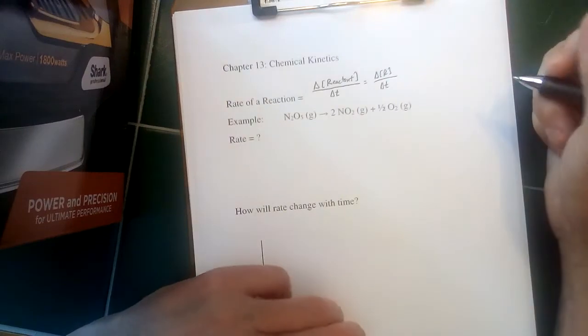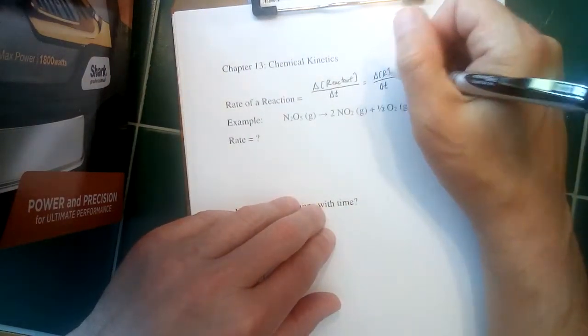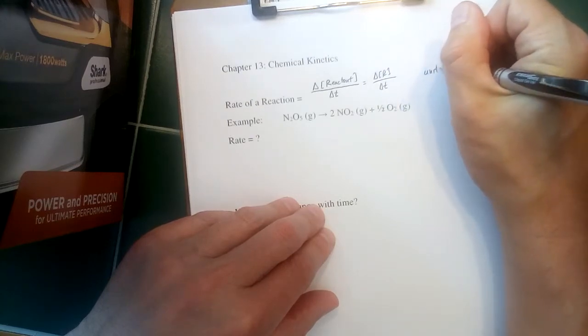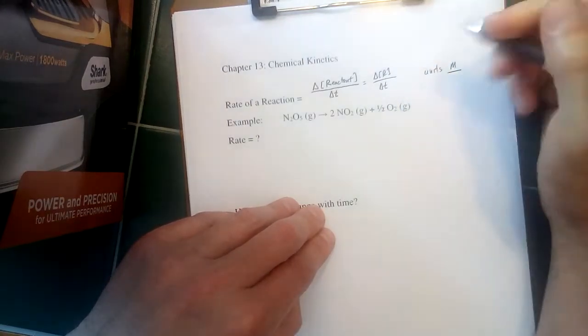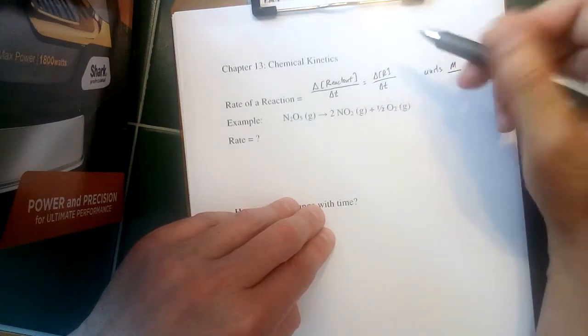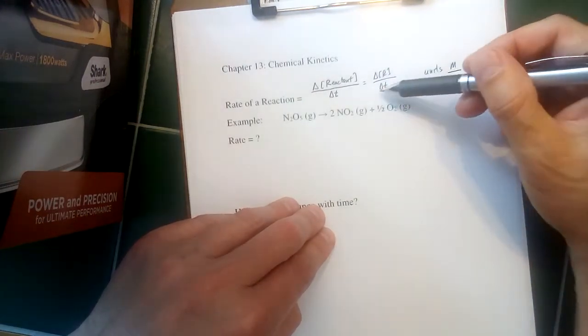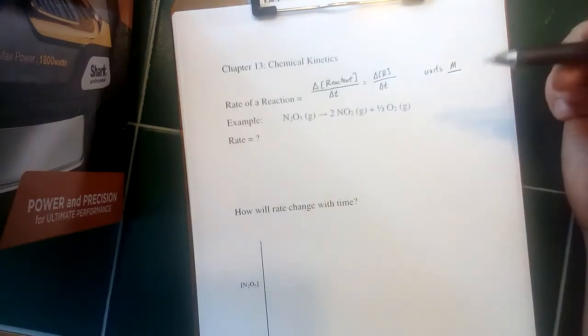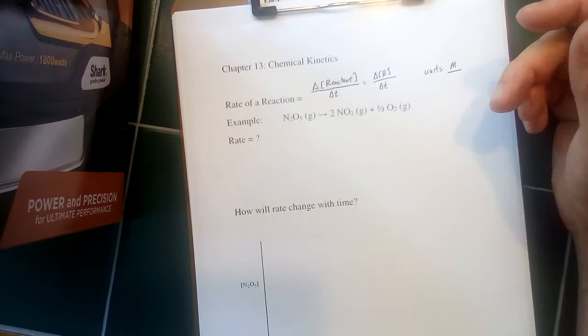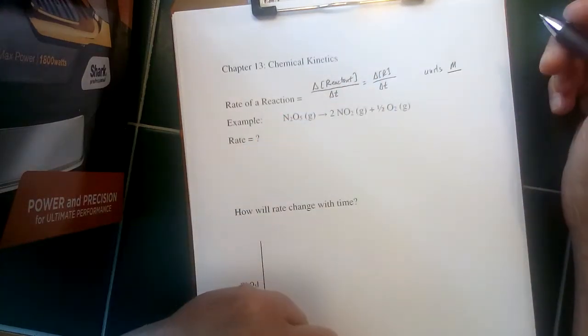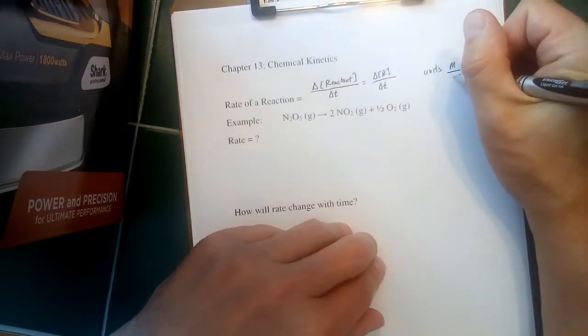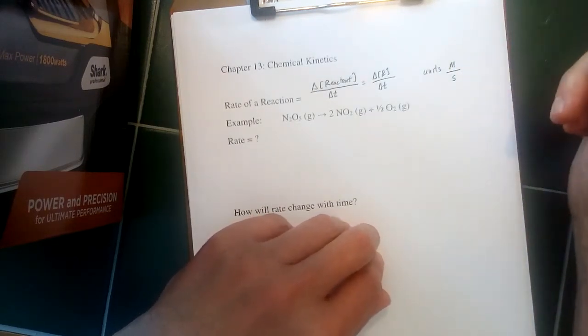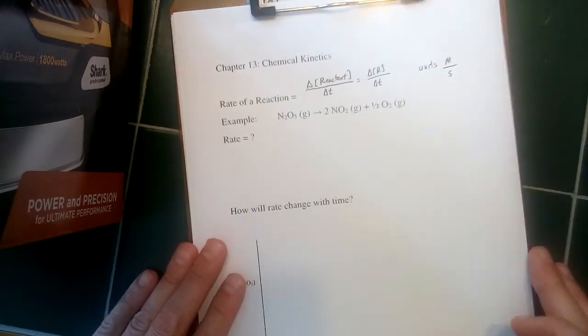Delta R over delta T. Now, unit-wise, we measure concentration in terms of molarity. So the units here for a rate is molarity on top, covering delta of the concentration. Now, the change in time on the bottom, we'll see lots of different time units, depending on the type of reaction we're looking at. Could go anywhere from seconds to years, even smaller than seconds, milliseconds or something like that. But probably the most common is seconds, but we'll have concentration units on top, time units on the bottom of this relationship.